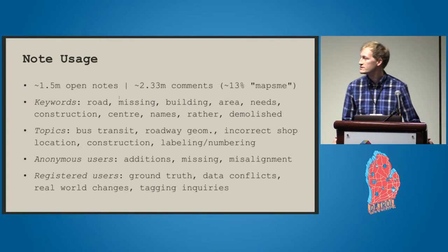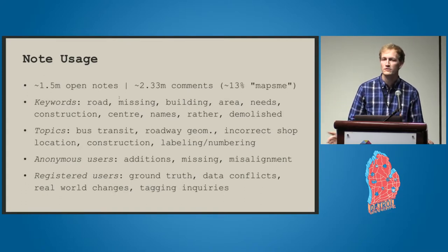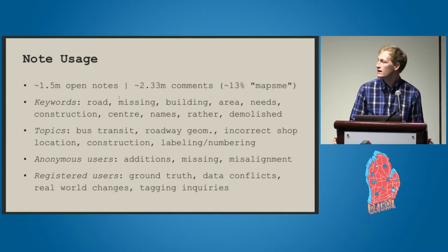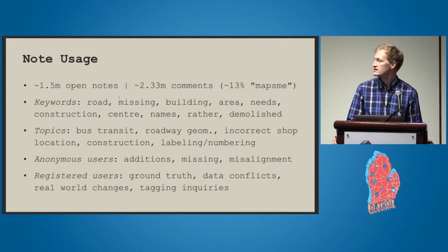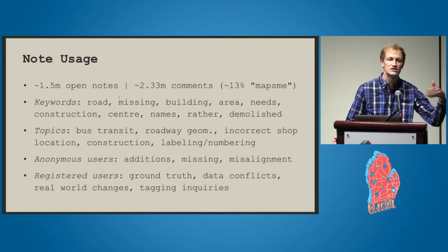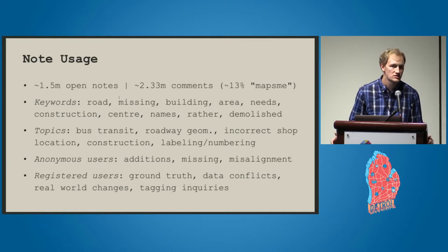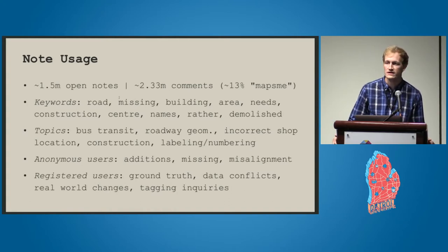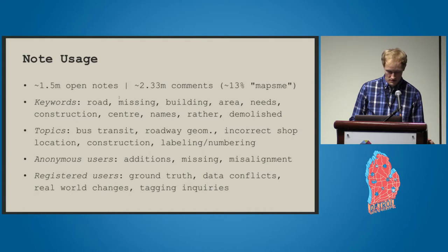A lot of anonymous users, who you could probably assume are more novice editors, would highlight some sort of additions, things that are missing, or maybe just misalignment with some sort of base imagery. Whereas registered users looked at asking: can we ground truth something? Can we see if there's some sort of data conflict? And how has that changed in the real world, like with construction being introduced? And a lot of tagging inquiries — what should I tag this as? Is there a preset that we can add for this?